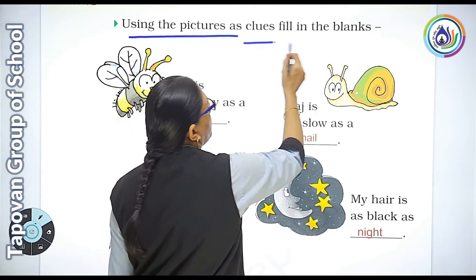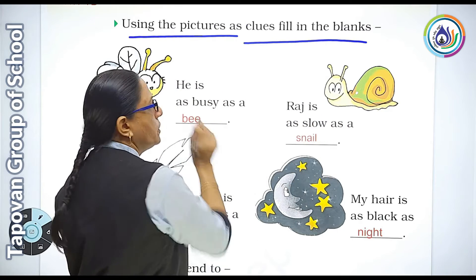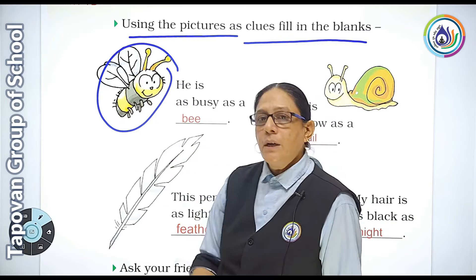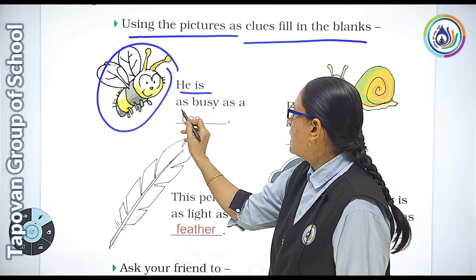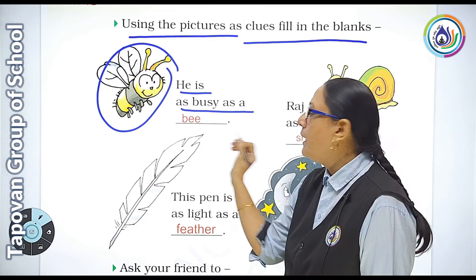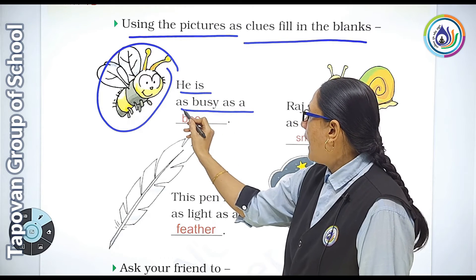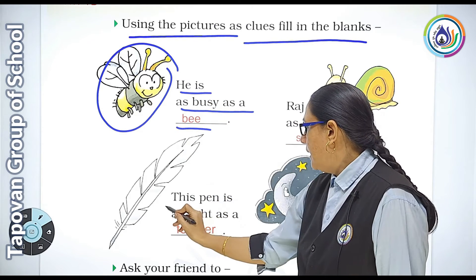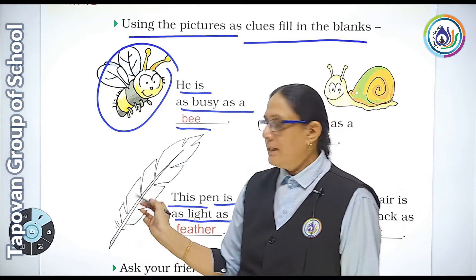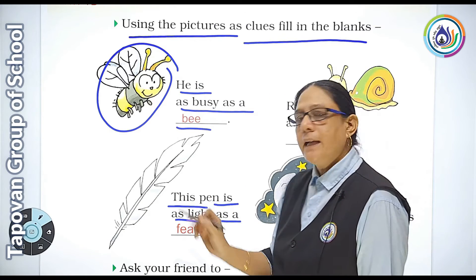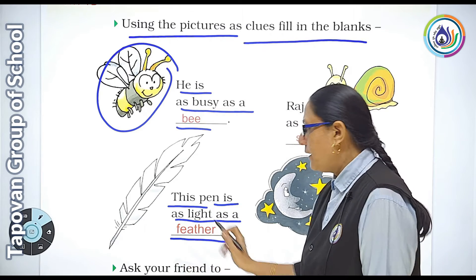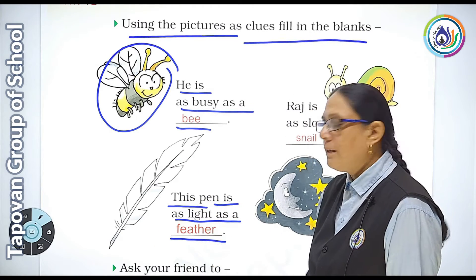Using the picture as a clue, fill in the blanks. For example: he is as busy as a honey bee — honey bee hamesha busy hoti hai. This pen is as light as a feather — feather ekdam light hota hai. F-E-A-T-H-E-R, feather.